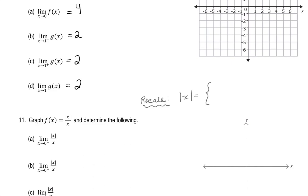If the number inside the absolute value bars is positive or equal to zero, the absolute value is just that number, x — because the distance to 0 is just x itself. But if x is negative, we need to take the opposite of that negative to get back to a positive result. So |x| = x when x ≥ 0, and |x| = -x when x < 0.